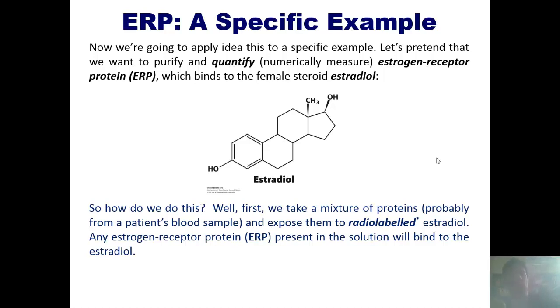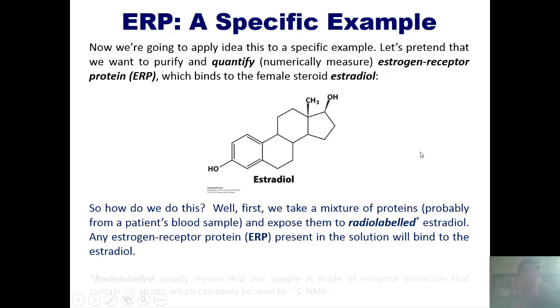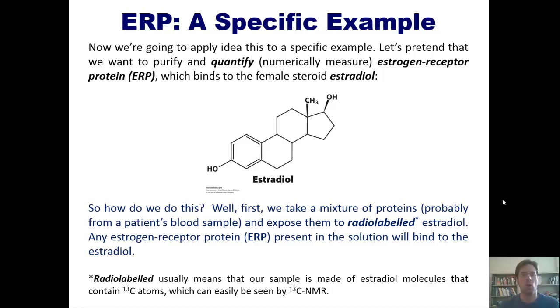What if you throw in estradiol that has been radiolabeled? When I say radiolabeled, what I'm talking about is you can buy or synthesize estradiol that has at least one or more carbon-13 atoms in it. Carbon-13 atoms are very easy to see by using NMR spectroscopy. So if you've done that and you throw in a bunch of estradiol that has been carbon-13 labeled, that estradiol will bind to all of your ERP.